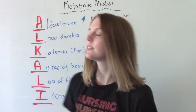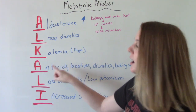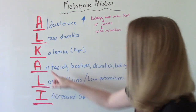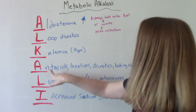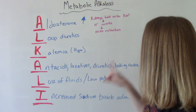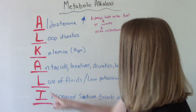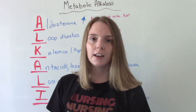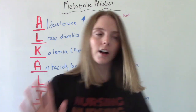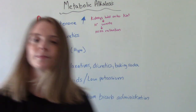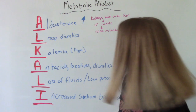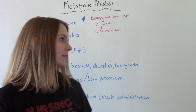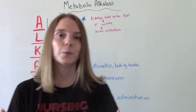K is for kalemia hypo — so hypokalemia, not enough potassium. A is for overuse of antacids, laxatives, diuretics, and baking soda. L is for loss of fluids, caused by excessive vomiting or GI suctioning. The second L is also for low potassium — same as above. And I is for increased sodium bicarb administration. So that's a quick way to remember the causes.